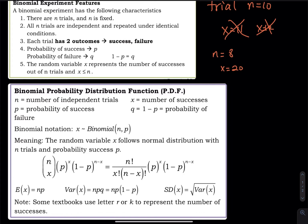That covers the features. Now for the probability distribution function — write this down. Everything in this box is for binomial distribution only. N is the number of independent trials, X is the number of successes, P is the probability of success, Q is 1 minus P — the probability of failure. For binomial notation, the random variable X follows a binomial distribution with n independent trials and probability of success P.